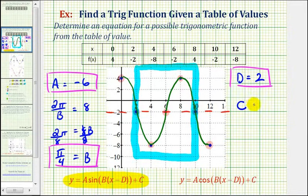Finally, the value of C affects the shift up or down. Since the midline is y equals negative two, the graph is shifted down two units. Therefore, C is equal to negative two.